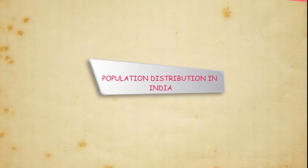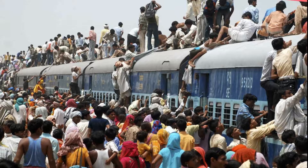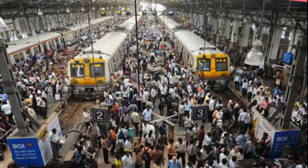Population distribution in India: do you know that every sixth person living on earth is an Indian? The total population added every year in India is equal to the population of Australia. In terms of area, India is the seventh largest country in the world, while population-wise it is second only to China.